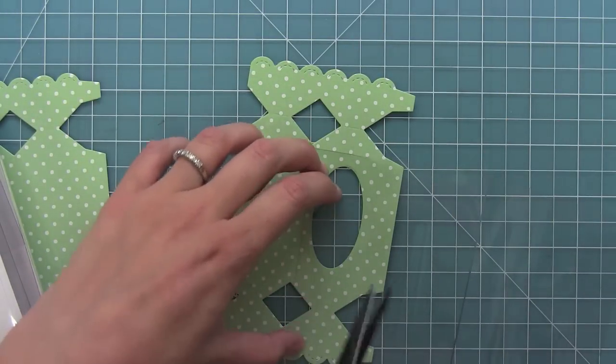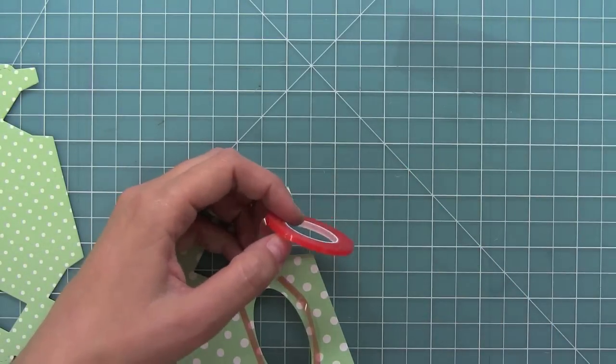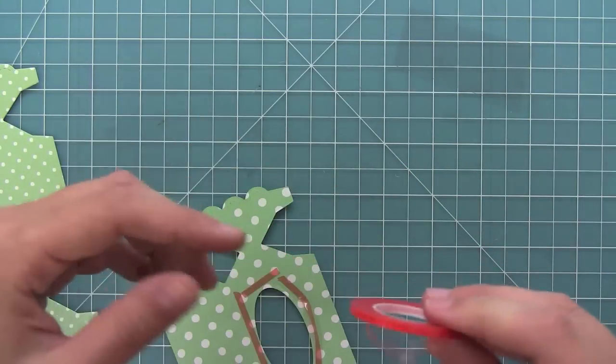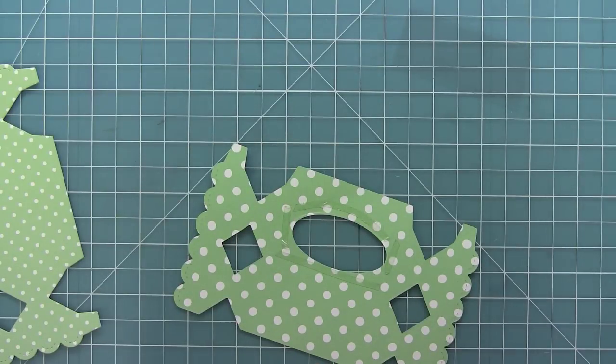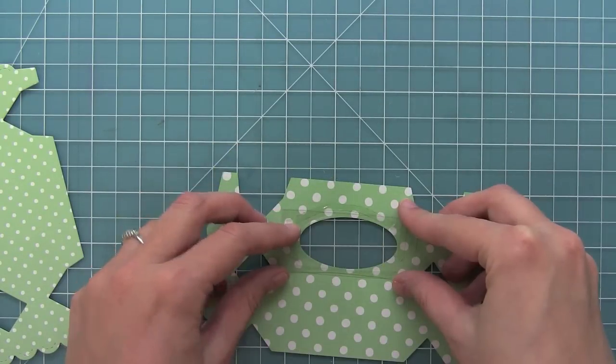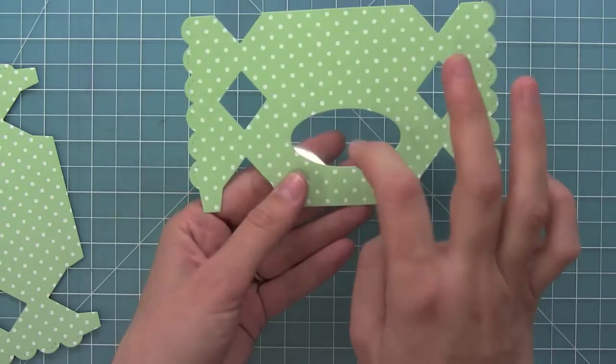Then I am just cutting some acetate. You could use packaging or transparency, anything like that. I'm going to put some really strong adhesive around my die cut opening and add that acetate piece. Now I'm going to have this cute little candy box with a window to be able to see the treats inside.